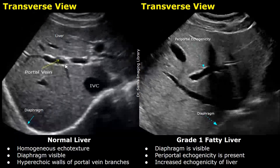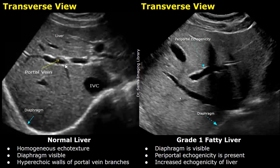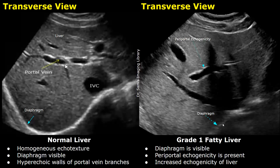Here is another image showing a grade one fatty liver. You can see the difference in echogenicity of the liver and compare the brightness with the normal image — it is increased. The hyperechoic walls of portal veins can be seen and the diaphragm is also visible, so this is grade one fatty liver.